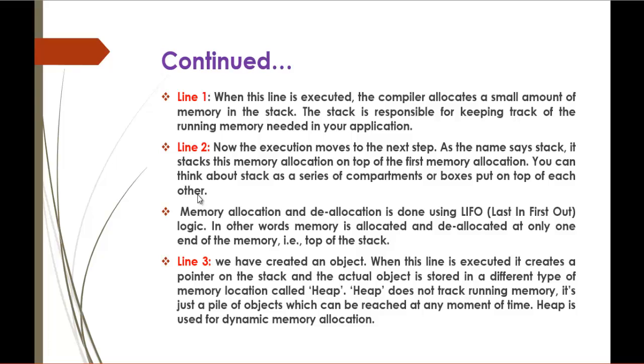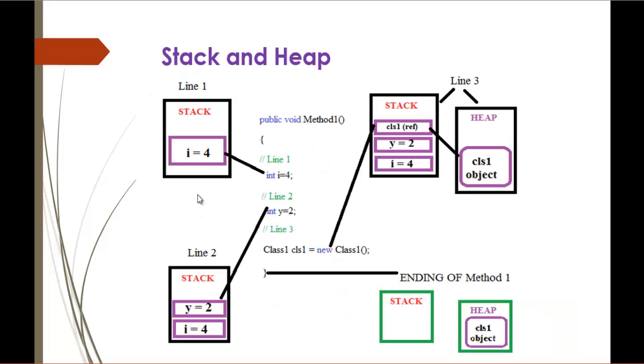As I said, all the value types will be stored in the stack. Since it is integer, int i equals 4 is stored in the stack. And now the second line, int y equals 2, will be stored above i equals 4. This is how stack stores values. The first line will be at the bottom and int y equals 2 is the second step. If we store any other variable, it comes and sits on the stack on top of the previous value we declared. This is how the stack works.